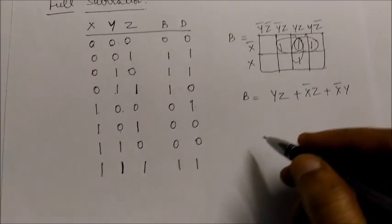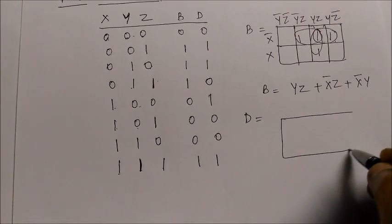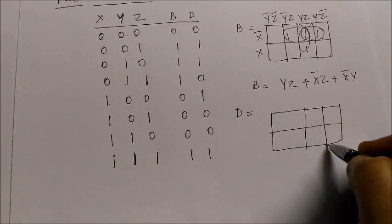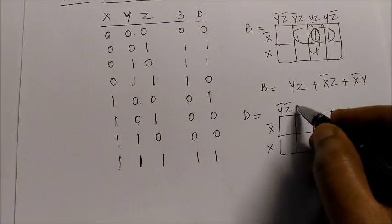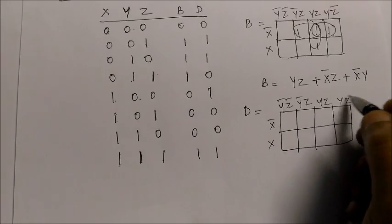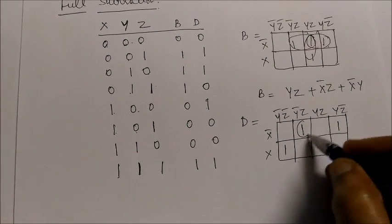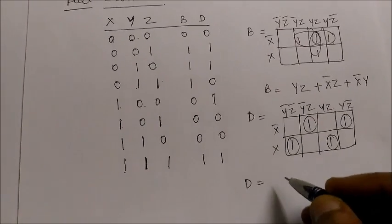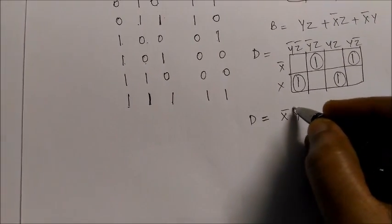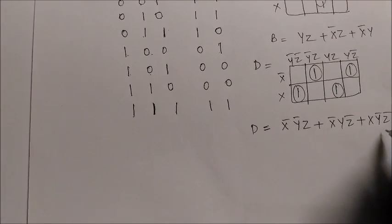Coming to the expression for difference, using the 3-variable K-map again with the same axes, difference is 1 for minterms 1, 2, 4, and 7. No simplification is possible using K-maps. Writing out the full expression: d = x-bar·y-bar·z + x-bar·y·z-bar + x·y-bar·z-bar + x·y·z. This can be reduced using XOR relationships, as already shown in the full adder video — please refer to that as well.